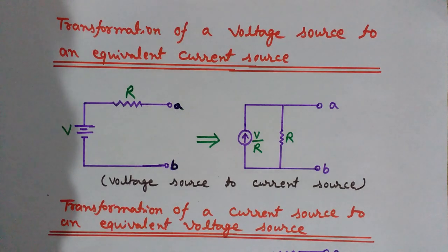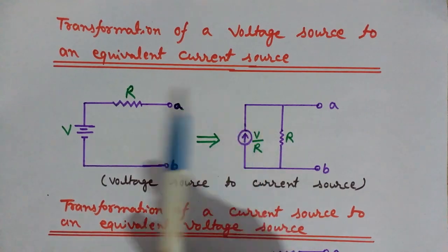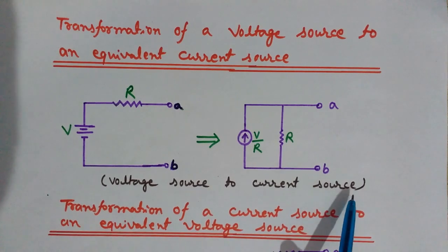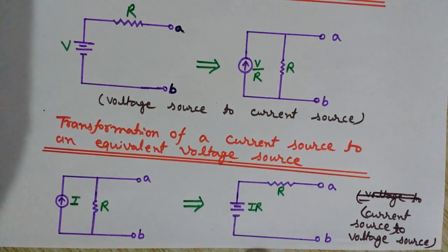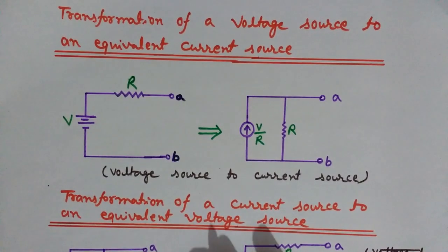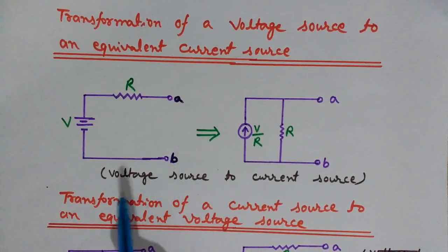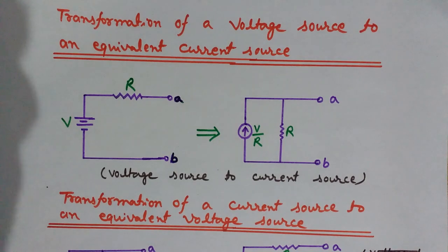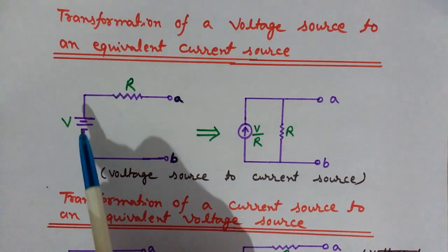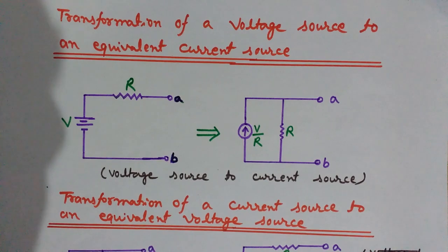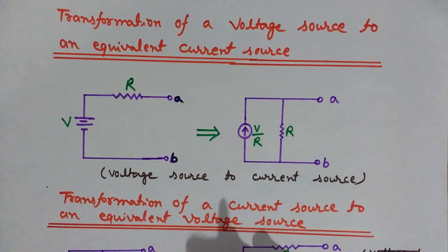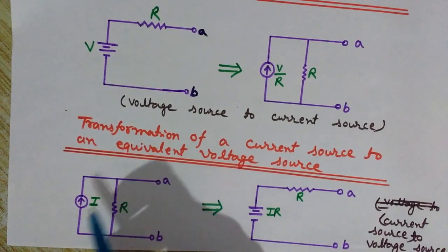Here is the diagram. This one shows the voltage source to current source conversion, and this one shows the current source to voltage source conversion. As I mentioned, for transformation, each voltage source should have a series internal resistance, and each current source should have a parallel internal resistance.